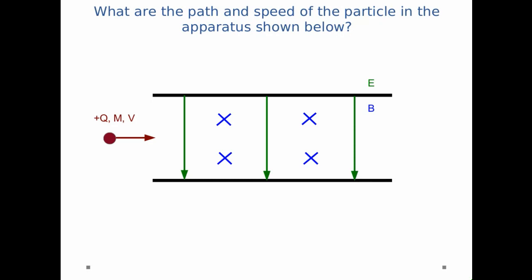And I will send in a particle with a charge plus q, mass m, and an initial velocity v into these fields. My question is what are the path and speed of the particle in the apparatus?